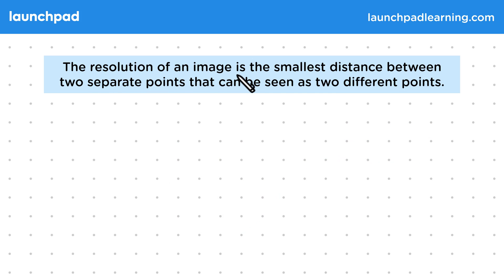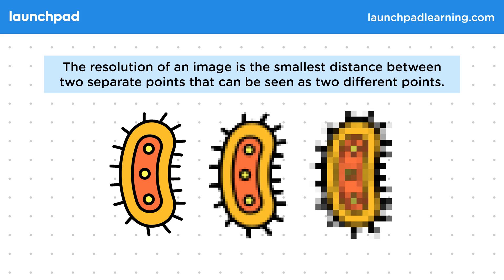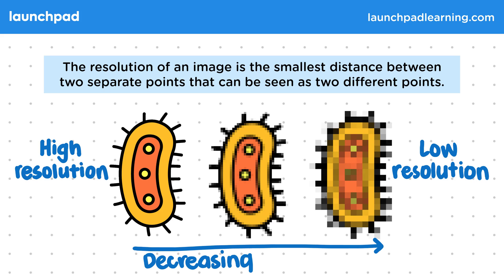The resolution of an image is the smallest distance between two separate points that can be seen as two different points. Have a look at this series of images. At high resolution, we can see quite a lot of detail in our simple diagram. But at low resolution, it's a lot less clear what we're looking at. As the resolution decreases, we see a lot less detail.